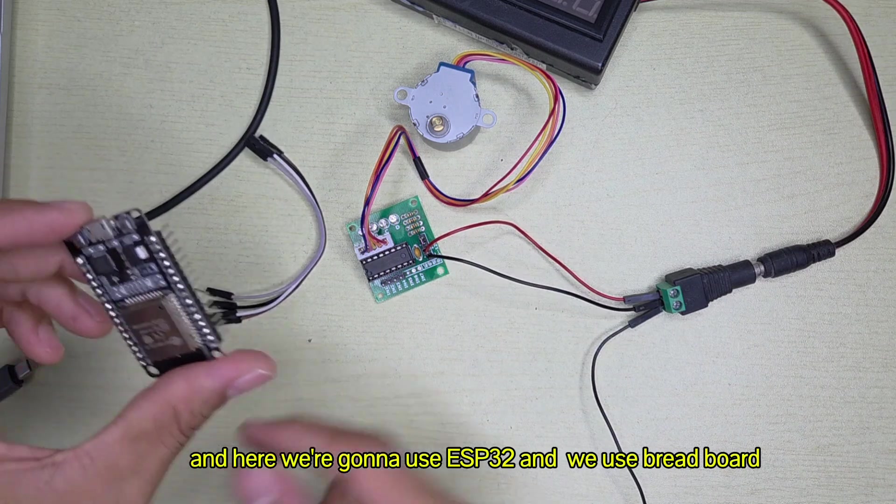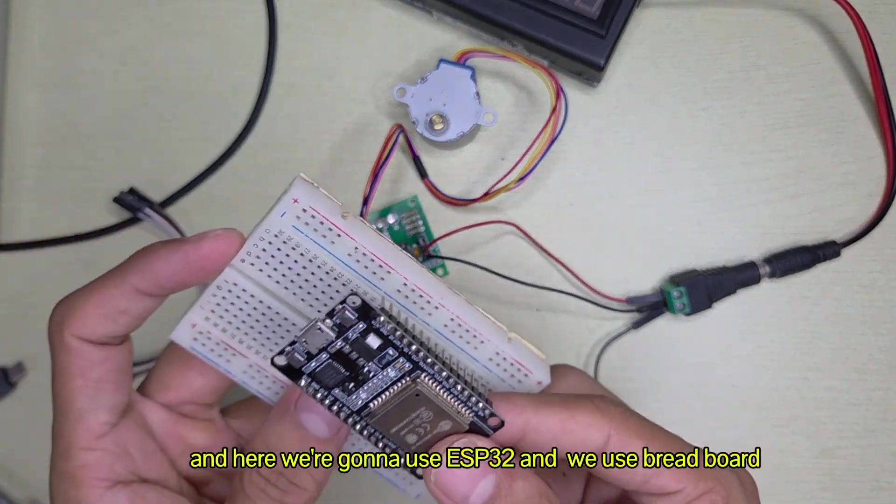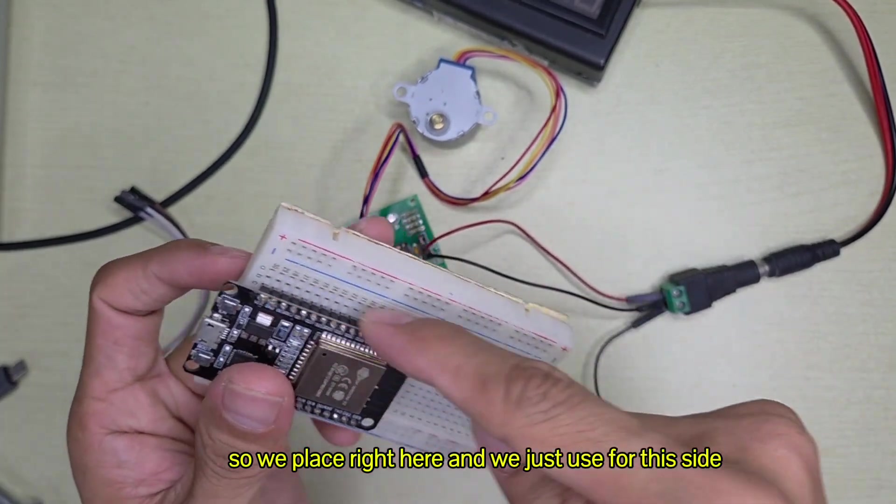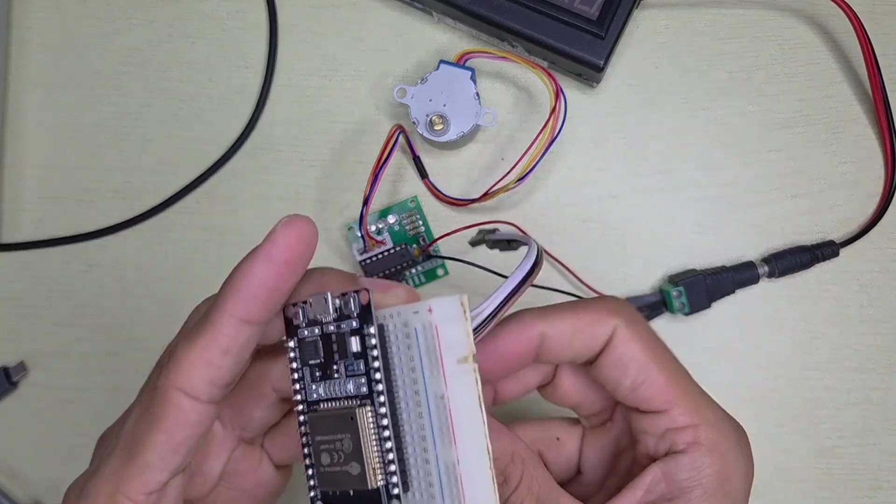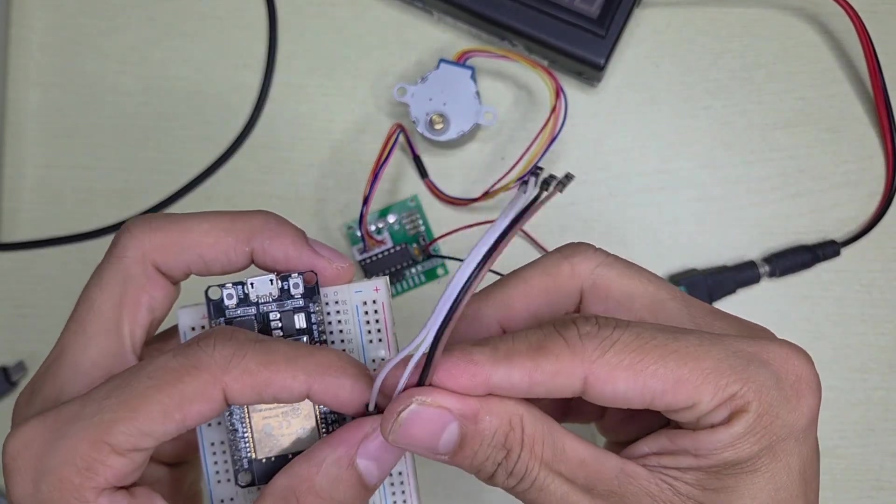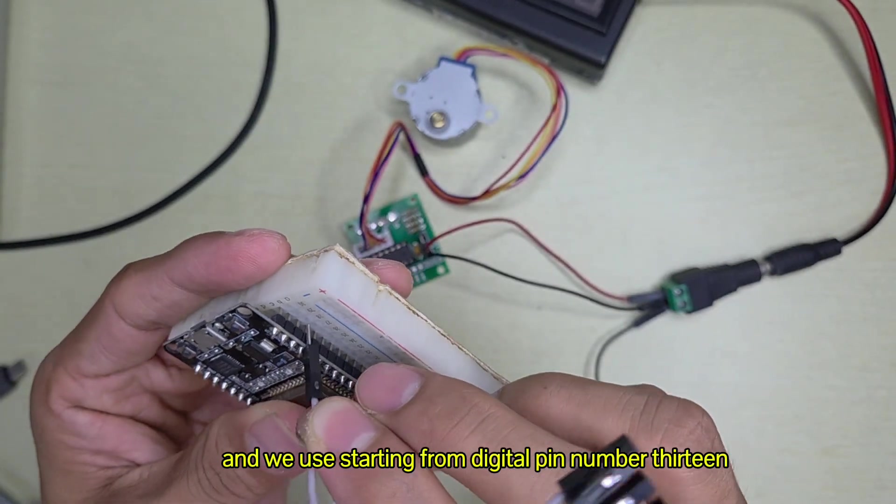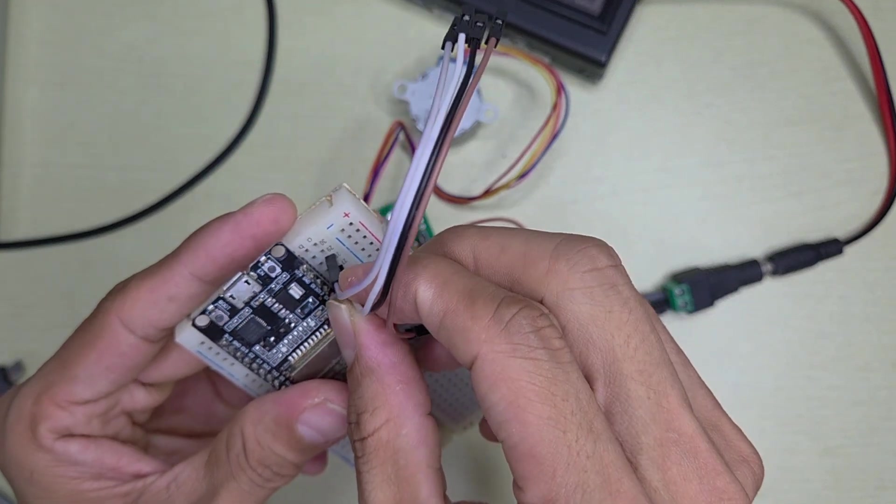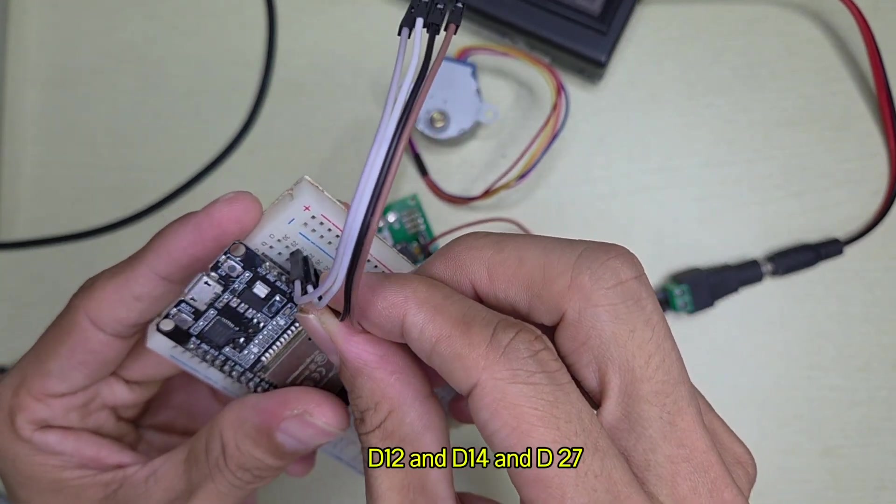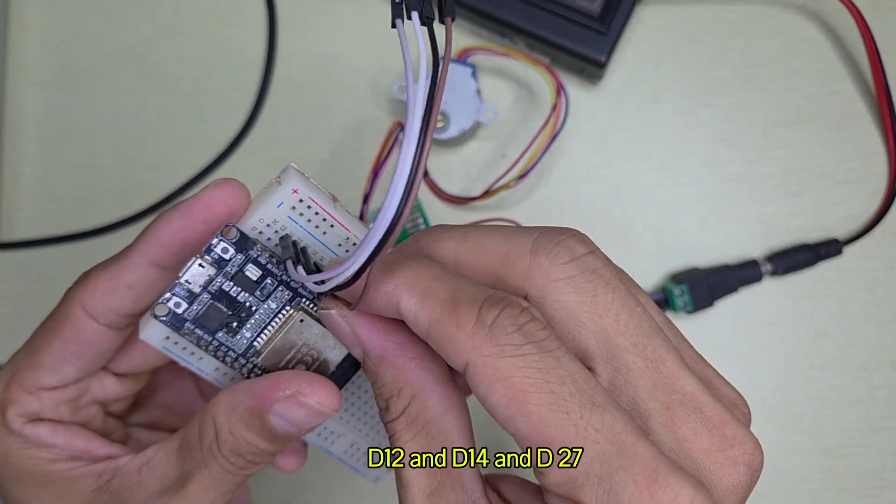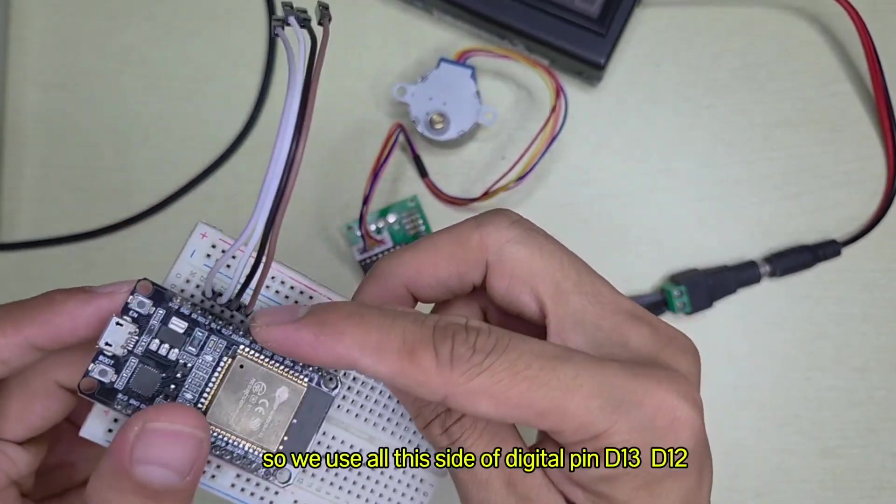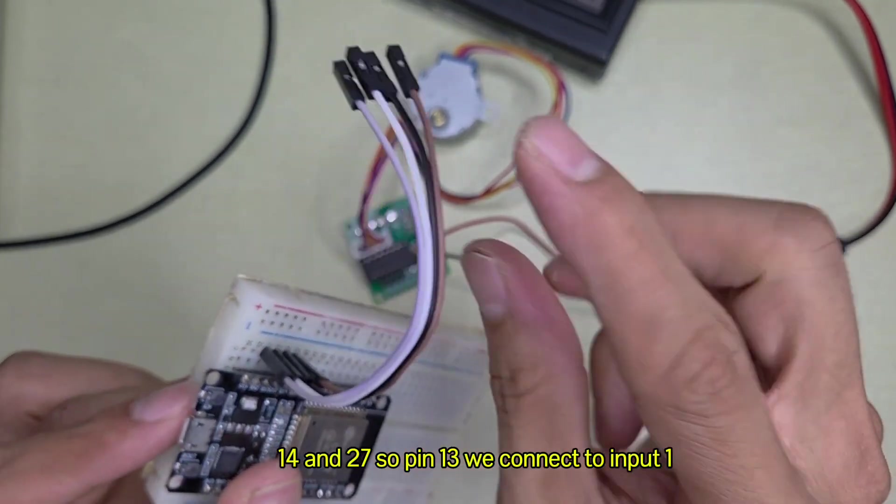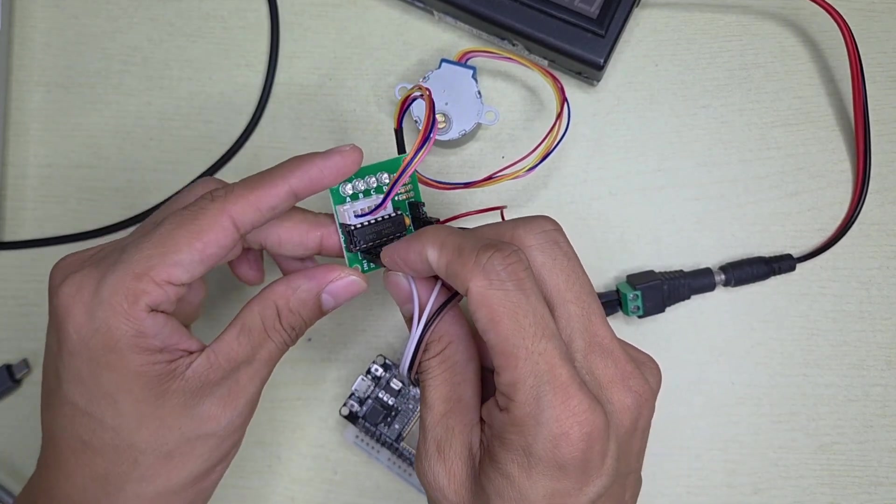Here we are going to use ESP32 and we will use a breadboard. We place it right here and we use this side, starting from digital pin number 13, 12, D14, and D27. So we use all this side of digital pins.